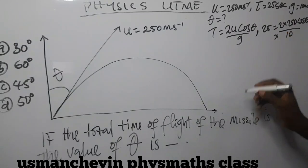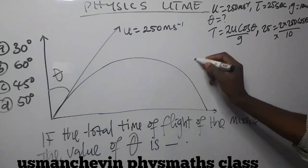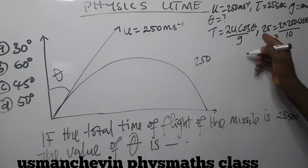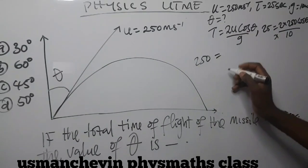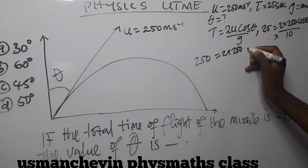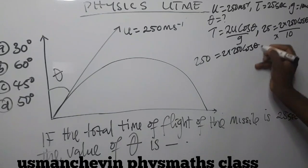So we cross multiply and that is 10 times 25 is 250 equal to 2 times 250 cos theta. We divide through by 2 times 250.